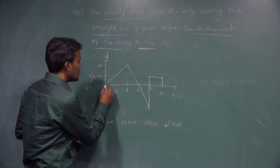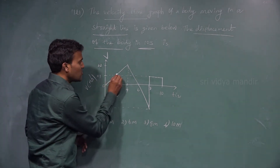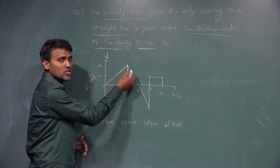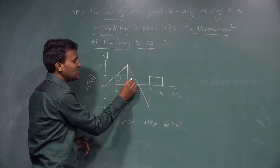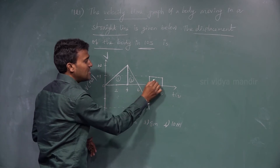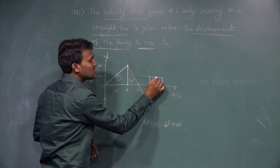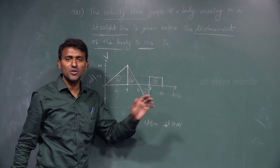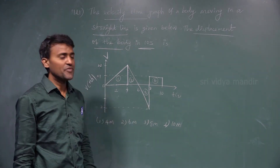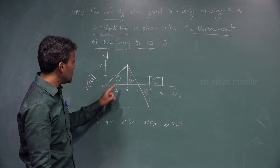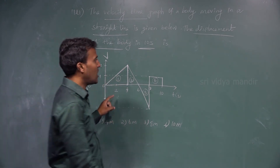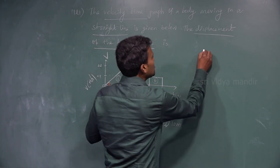The graph forms one right-angle triangle which I am splitting into two triangles. So we have a first triangle, a second triangle, a third triangle, and a fourth shape which is a square or rectangle. The area of each triangle is half into base into height.